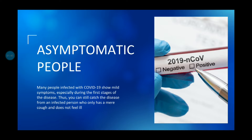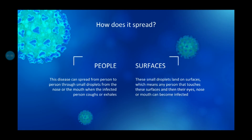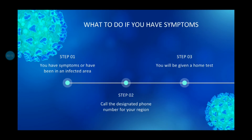But there are some people who do not show all the symptoms, or might show only mild symptoms, but still they are infected by coronavirus. This disease can spread from person to person through small droplets from the nose or mouth when the infected person coughs or exhales. These small droplets land on surfaces, and any person that touches these surfaces and then touches their eyes, nose, or mouth can become infected.